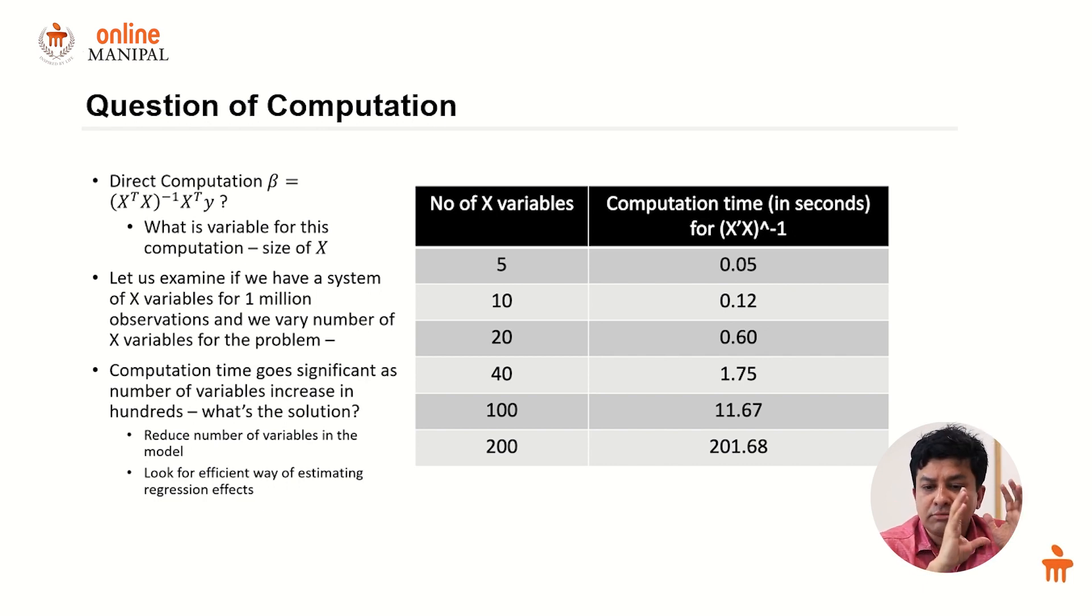The problem we discussed had five variables with max 36 data points of monthly data. Now think of several millions of customers about which you have data, and the number of variables could run into hundreds if not thousands. What is the way to solve a regression problem in such a setup?